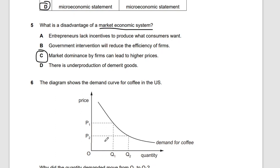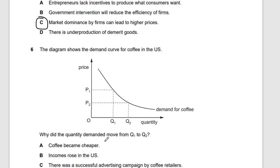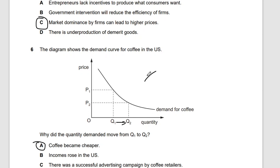Question six: the diagram shows the demand curve for coffee in the USA. Why did the quantity demanded move from Q1 to Q2? This involves a change in supply. The answer is A — when something becomes much cheaper, it's easier to produce. A lower price leads to lower demand along the demand curve.